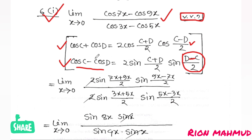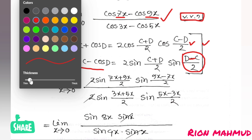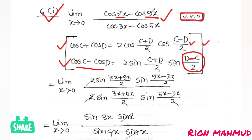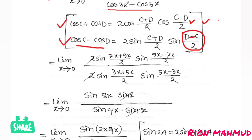Applying cos C minus cos D to the numerator: cos7x minus cos9x gives 2 sin((7x+9x)/2) sin((9x-7x)/2). For the denominator cos3x minus cos5x, we similarly apply the formula: 2 sin((3x+5x)/2) sin((5x-3x)/2).